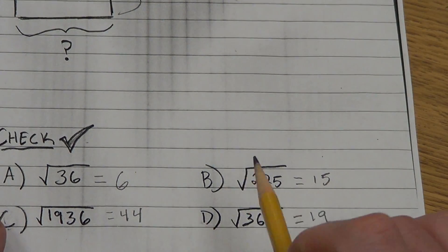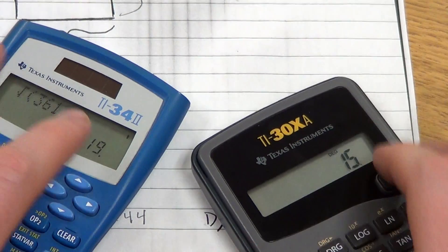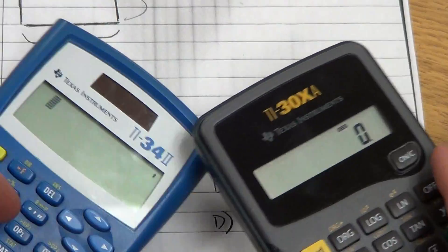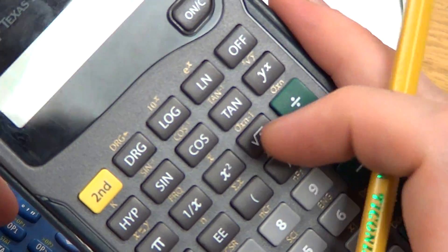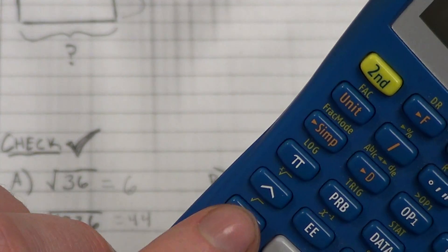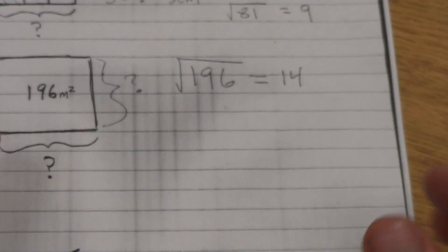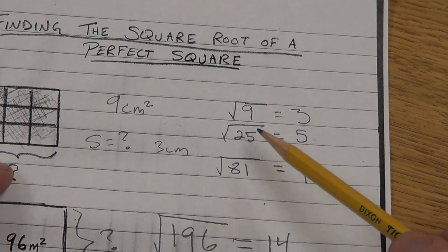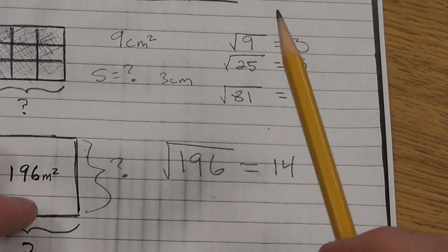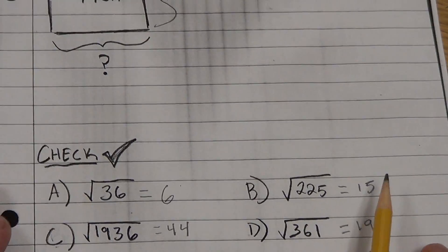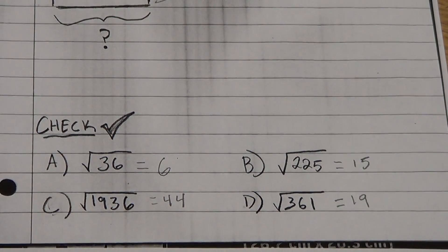That is how you find square roots using different calculators. If you're using a calculator you've never used before and you're not sure, find the square root button — it might be an actual button or a second function. Test something you already know, like the square root of 9 is 3 or the square root of 25 is 5, to verify you're doing it correctly. I hope this helps — see you in class.